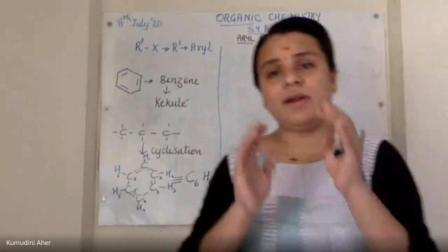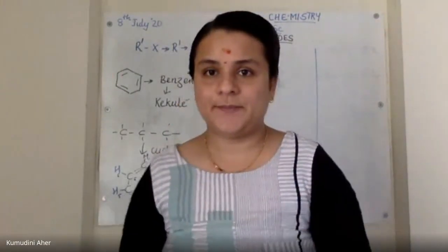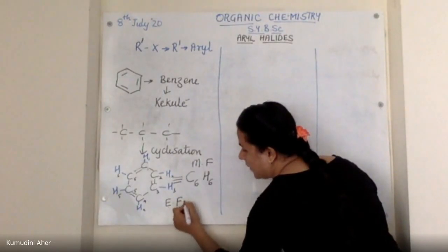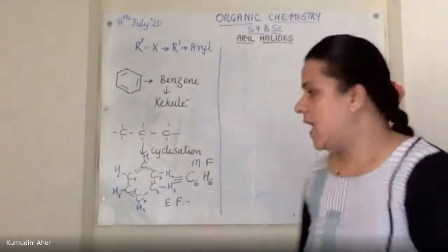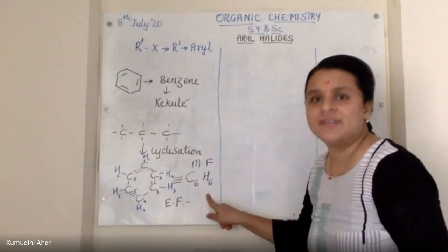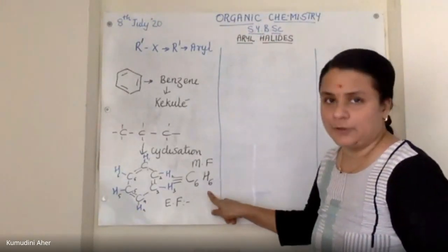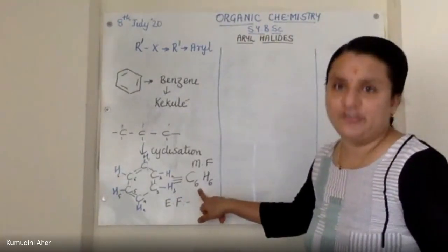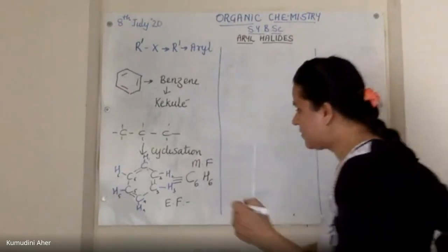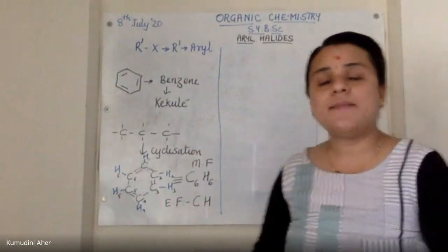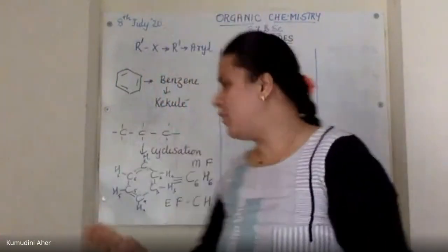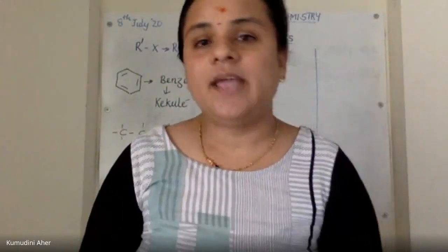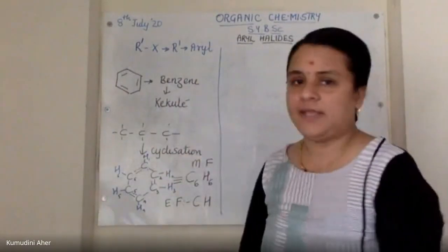Now we talk about empirical formula. Empirical formula means if molecular formula has a common divisible number - here six is common to both - so divide the molecular formula by six. So empirical formula is CH. This is the molecular formula and empirical formula of benzene ring.